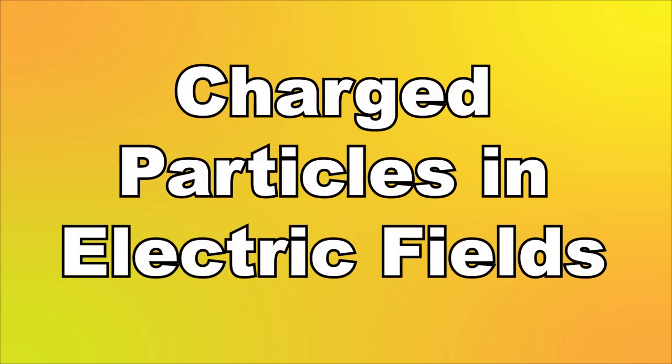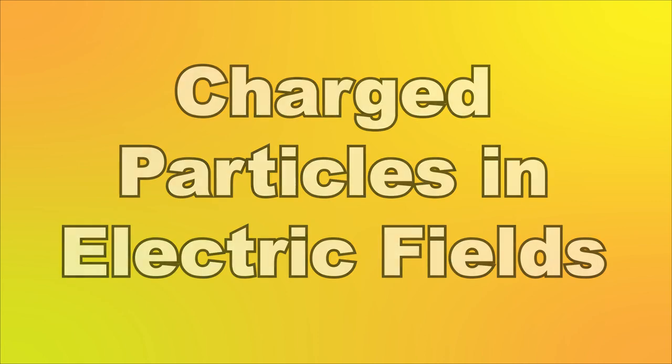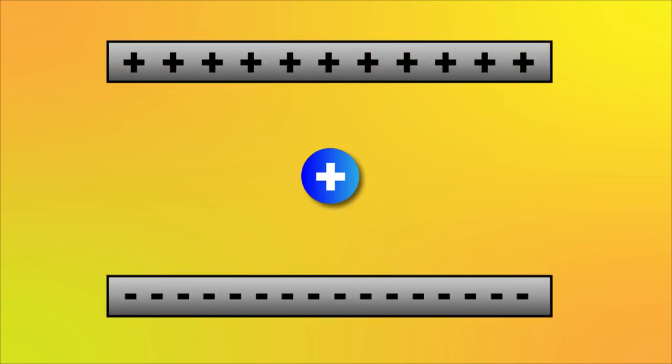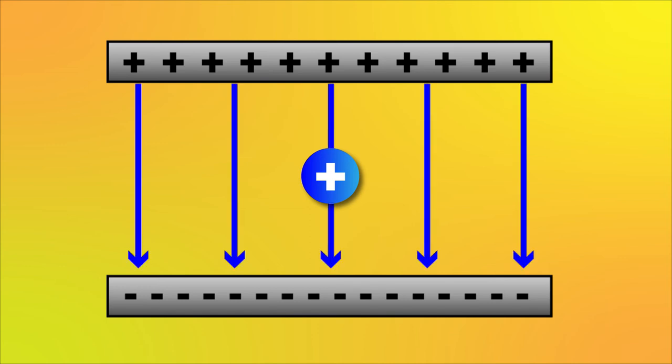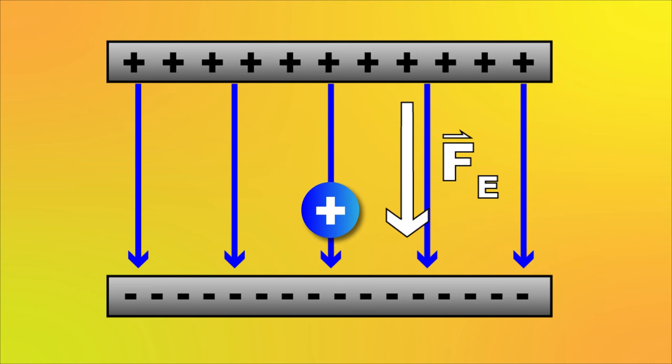So why do we even care about electric fields? Well, one common application is using them to describe the movement of charged particles. Let's take our uniform electric field and put a positive charged particle in there. Note, the electric field between these plates is pointing down, away from the positive top plate and toward the negative bottom plate. The positive charge we put in the electric field experiences an electric force downwards, in the downwards electric field. This makes sense. The positive object is attracted to the negative bottom plate and repelled from the positive top plate. So moving downwards seems logical.